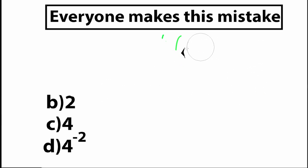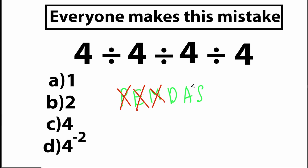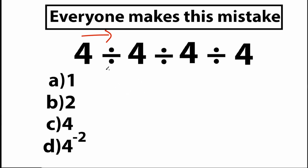Let's solve the original question using PEMDAS. Write P, E, M, D, A, S. This is a very simple expression: we don't have parentheses, no exponents, no multiplication, no addition, no subtraction — we have only D, which stands for division. We perform division in strict order from left to right. The first sign from left to right is this first division: 4 divided by 4 equals 1.